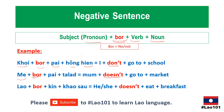'Mae bo bai hong hian' — mom doesn't go to the market. 'Lao bo gin khao sao' — he or she doesn't eat breakfast. I just used the same sentences but added 'bo' into the structure.